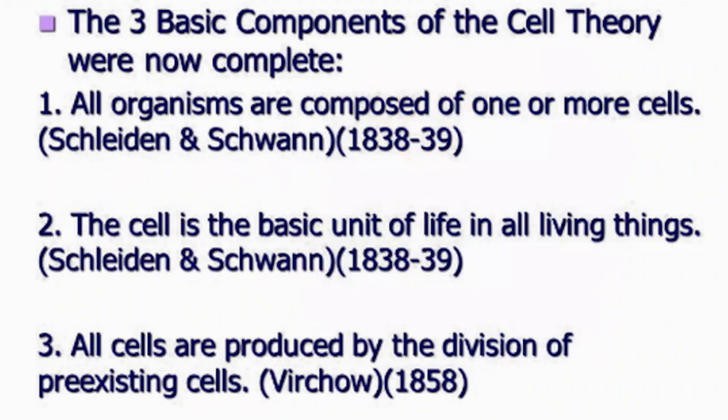These scientists said that there are 3 common features in each living organism, which we call cell theory. The first feature is that all organisms are made of one or more cells. The second feature is that the cell is a basic unit of life or living organism. The third feature is that all cells are created by the division of pre-existing cells.